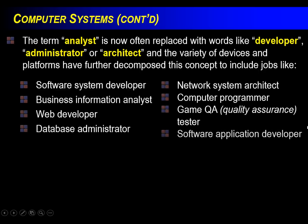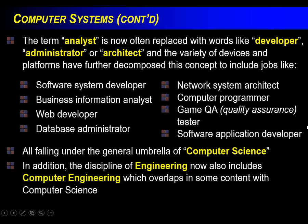Here are some examples of actual job titles of people working right now who have a degree in computer science: software system developer, business information analyst, web developer, database administrator, network system architect, computer programmer, game quality assurance tester, and software application developer. Notice that the words 'computer' and 'science' don't even appear in many of those job titles. Computer science is an umbrella term that includes all those things — sure, programming is probably the main tool, but maybe not so much for the business information analyst.